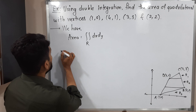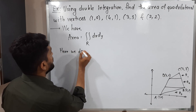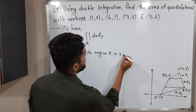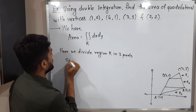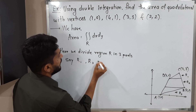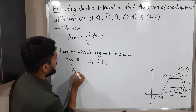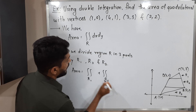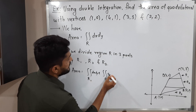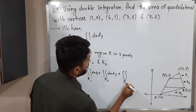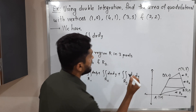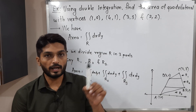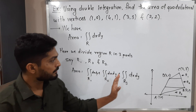We call the three regions R1, R2, and R3. The required area equals the double integration over R1 plus double integration over R2 plus double integration over R3, all of dx dy. If the strip is parallel to the x-axis we write dx dy; if parallel to the y-axis we write dy dx. We find the areas of the three regions separately and add them.